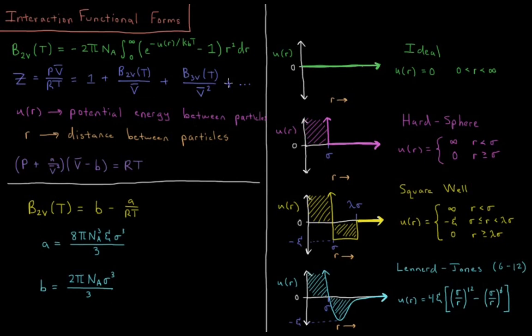These virial coefficients depend on the interactions between particles. If a particle is ideal, there is no interaction and there is no virial coefficient, but most gases are non-ideal and do have some virial coefficient. This virial coefficient can be obtained by an integral expression: minus 2π times Avogadro's number times the integral from zero to infinity of e to the minus u(r) over k_B T, minus 1, times r squared dr.